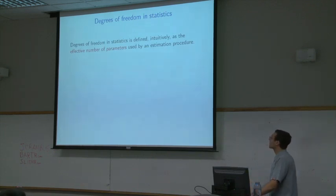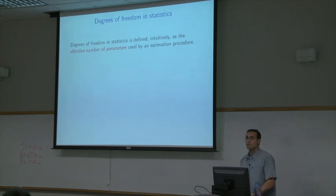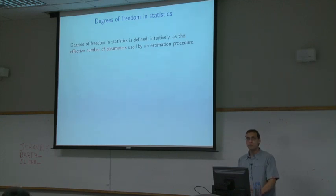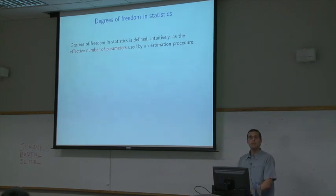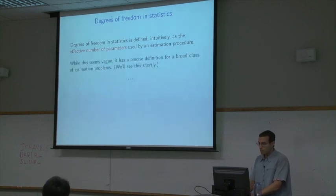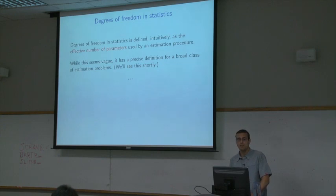In statistics and machine learning, degrees of freedom is defined intuitively as the effective number of parameters used by an estimation procedure. It's important that I'm referring to the estimation procedure itself rather than the final output — the degrees of freedom is not always just the number of parameters in the final model; it depends on how those were fitted. You can think of the estimation procedure as a black box, and we want to open it up and understand what's happening inside.